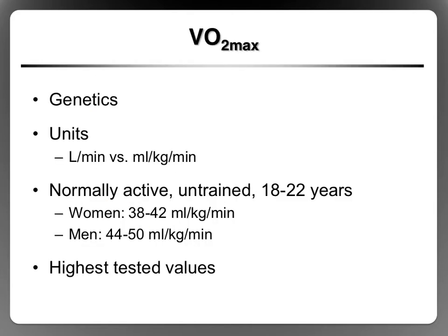As with many things we've talked about this semester, VO2max is very closely related to your genetics. Some people are born with higher VO2max abilities than others, so there's a very large genetic component. The units we express VO2max in: we can either express it in liters per minute or milliliters per kilogram per minute.